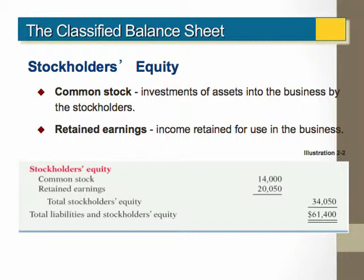The final section of the classified balance sheet is the stockholders' equity section. Typically in stockholders' equity, you will see common stock and retained earnings. Common stock is the actual amount invested or paid into the company in exchange for the stock of the company. Retained earnings are the profits of the company that have been kept in the company for future use that have not been returned to the stockholders in the form of dividends.